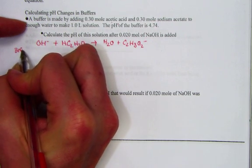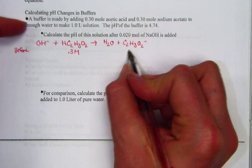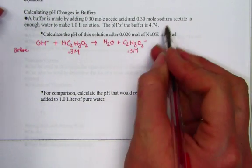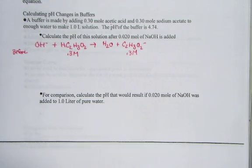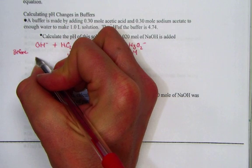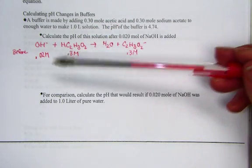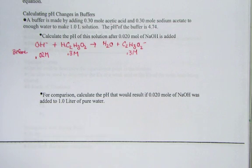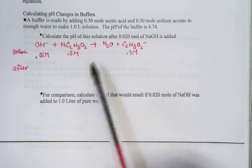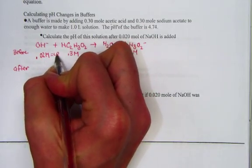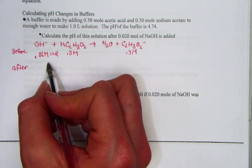Before our reaction, we had 0.3 molar solution of acetic acid, and we had a 0.3 molar solution of the acetate coming from sodium acetate. We also work out the concentration of the base. The base was given to us as 0.02 molar, so we also have 0.02 molar as the concentration of hydroxide. 0.02 molar, 0.3 molar, and 0.3 molar are before they react. What's left after? Well, let's consider the hydroxide here definitely looks like the limiting reagent.